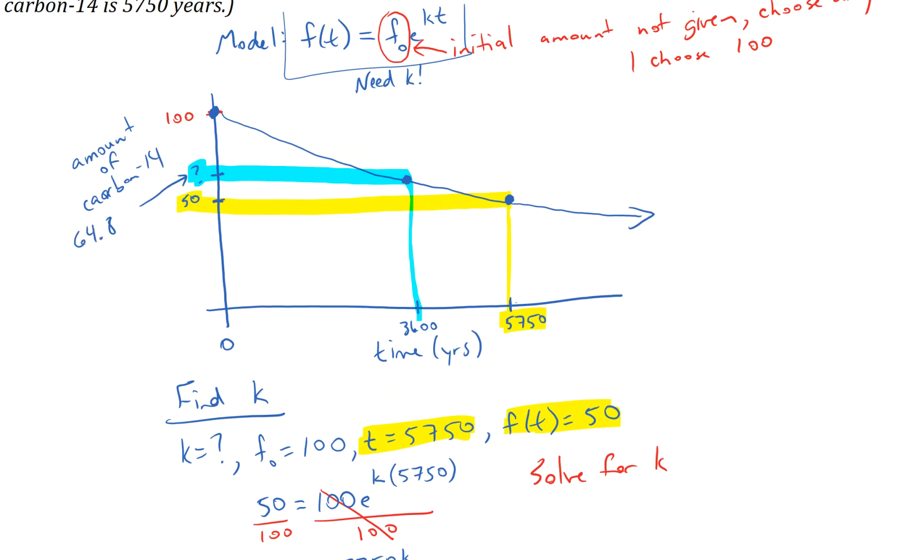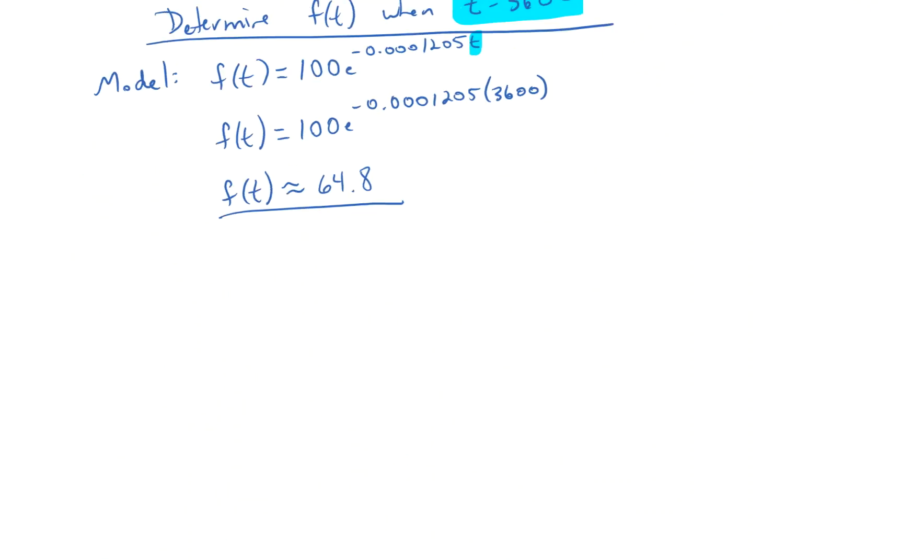So in 3600 years, the amount of Carbon-14 dropped from 100 to 64.8. So in 3600 years, the amount of Carbon-14 dropped from 100 to 64.8 units, whatever that may be.